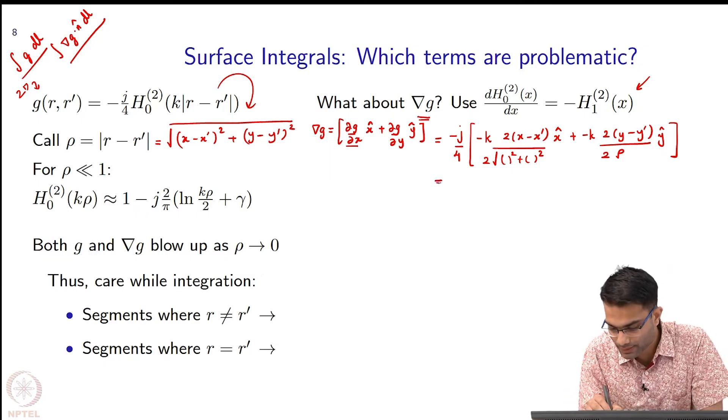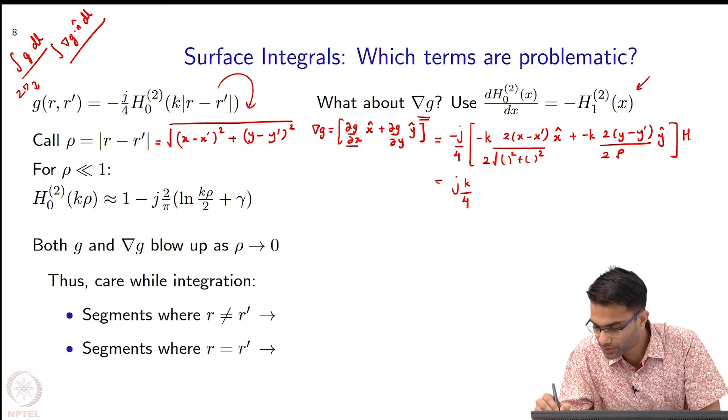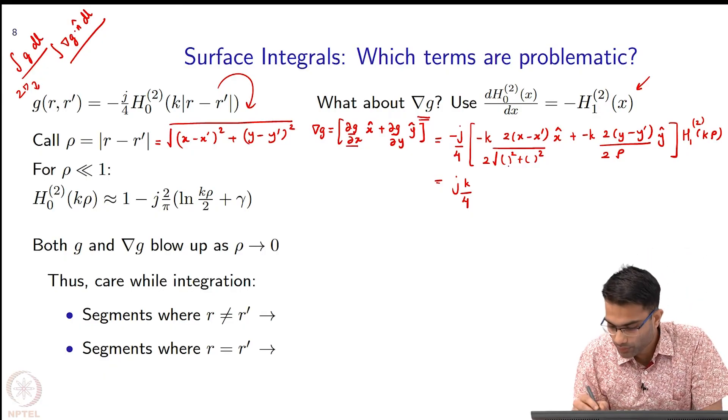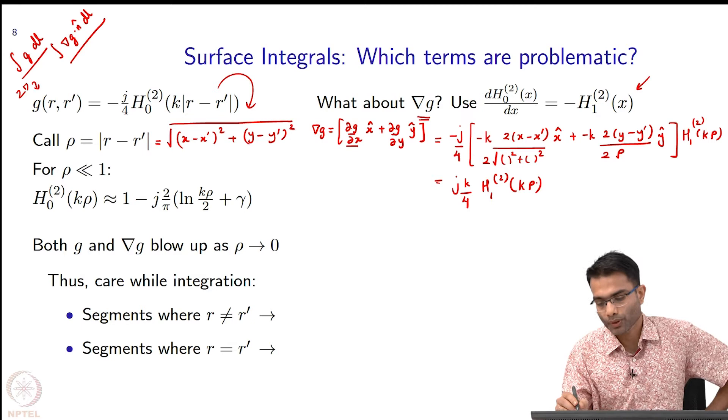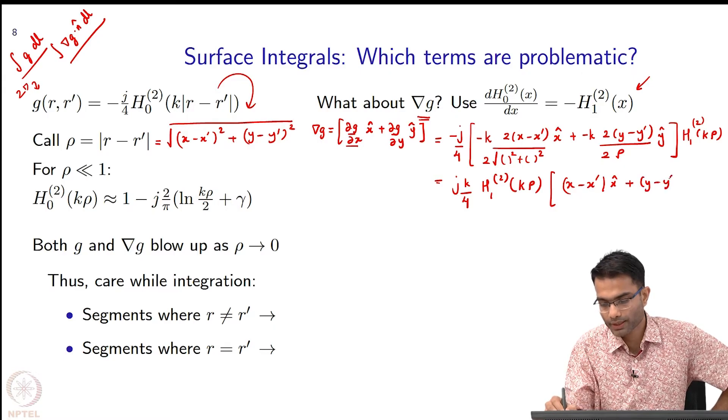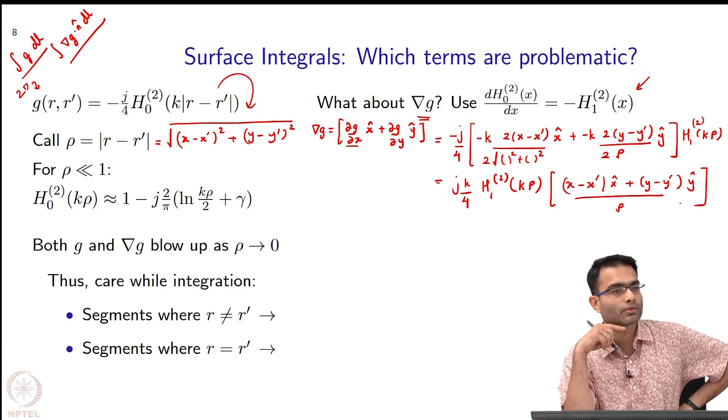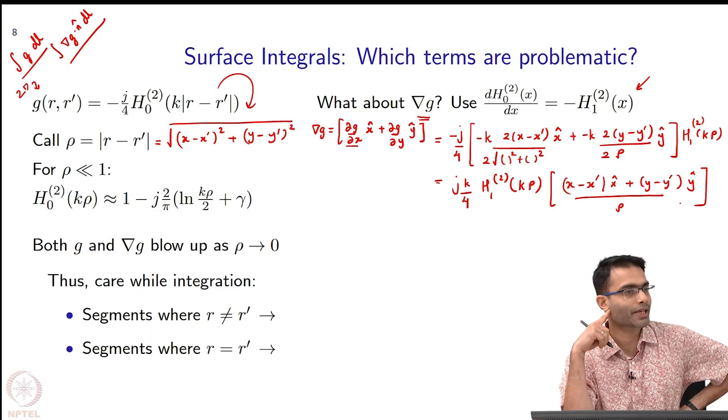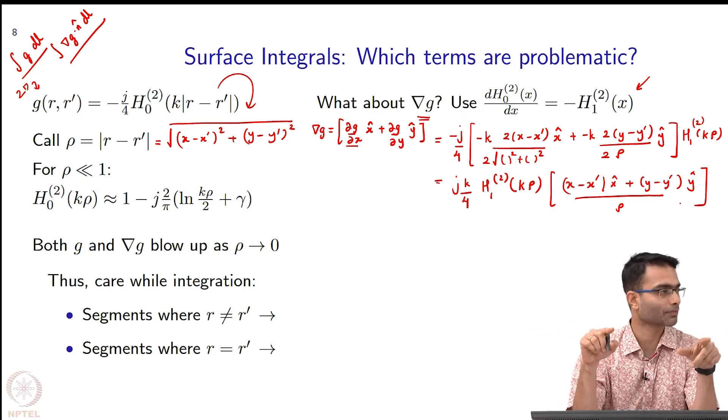I can simplify this. This will become J k by 4. What does this vector look like? I have (x - x')x hat + (y - y')y hat whole thing divided by rho. What is the norm of this vector, length of this vector? It is 1. It is a unit vector. And what is the direction of this vector? It is r minus r prime, a unit vector in r minus r prime.